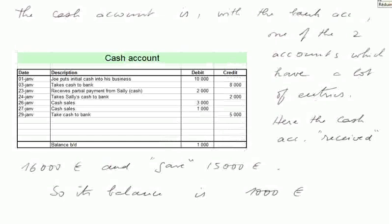Next, the cash account. The cash account is, along with the bank account, one of the two accounts which have a lot of entries, unlike the capital account. The cash account received 10 plus 2 plus 3 plus 1 — that's 16,000 euros — and gave out 15,000 euros. So its balance is 1,000 euros in debit. A cash account can never be in credit, because this is physical money — banknotes and coins — and it cannot be a negative figure.